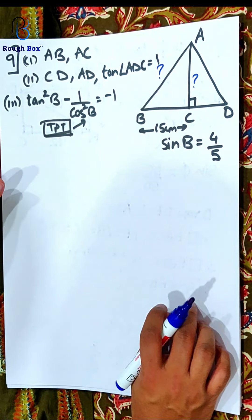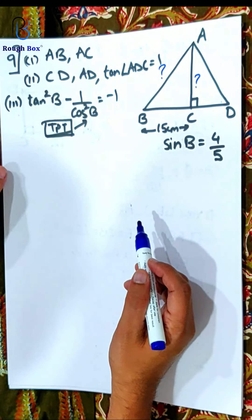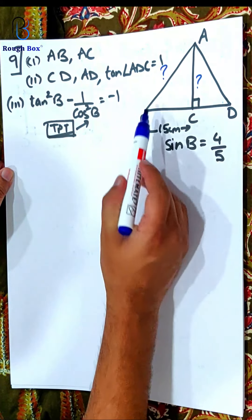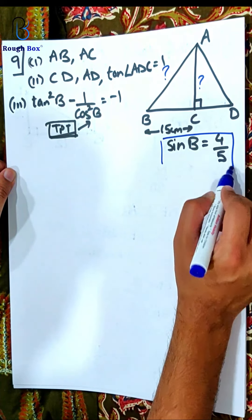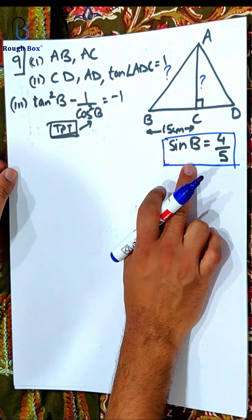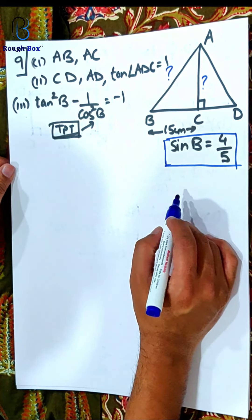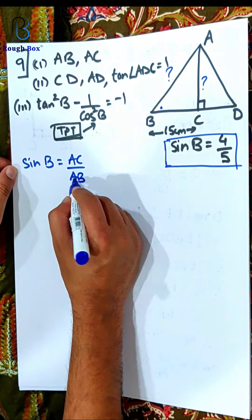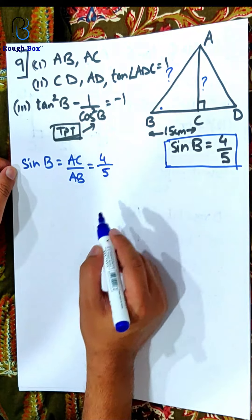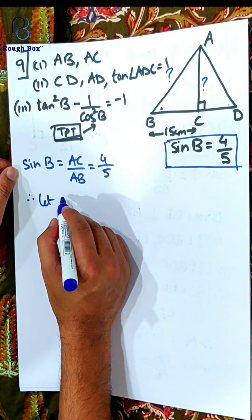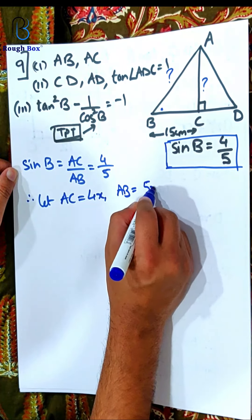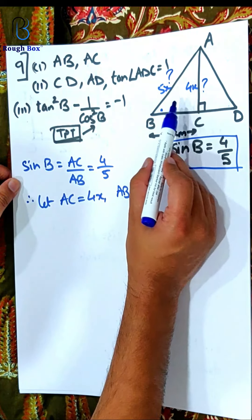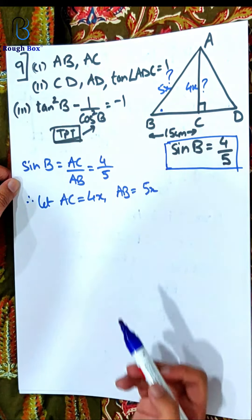Sum number 9 is a good question with 3 parts — it's a lengthy question. You have been given BC as 15. You've got to find AB and AC. If I want to apply Pythagoras theorem, I need 2 sides, but 2 sides are unknown. So they are giving something additional this time. Sin B — opposite upon hypotenuse — so sin B is 4 by 5, meaning AC upon AB equals 4 by 5. So let AC be 4x and AB be 5x. Apply Pythagoras, get the value of x, then substitute to find AB and AC.